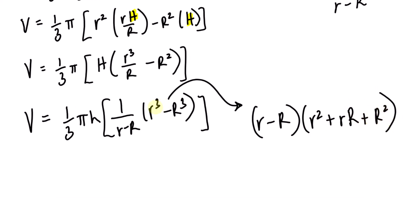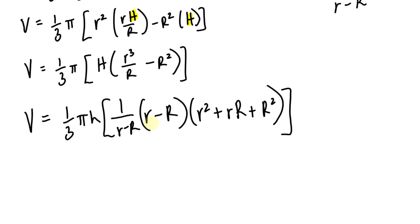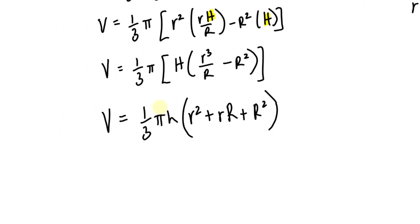That being said, I'm going to replace this expression with the one that I just found. With that move, this factor r take away R cancels out with the denominator r take away R. So we can erase this part and we're left with this equation. If I multiply pi only into these three terms, I end up getting V equals one-third h, or in other words, h divided by 3, and in parentheses, pi r squared plus pi times lowercase r times uppercase R plus pi times uppercase R squared.